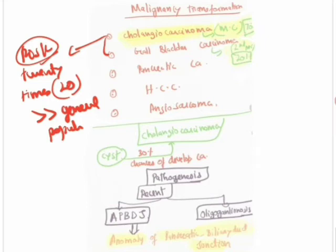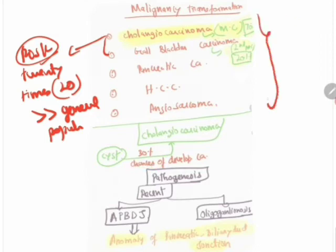Among malignancies arising from choledochal cysts, 70% will be cholangiocarcinoma and 20% gallbladder carcinoma, with other types comprising 10%. Note that 30% of patients with choledochal cysts develop carcinoma — this is separate from the distribution among malignancy types.